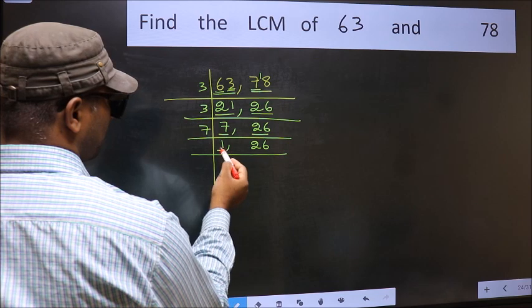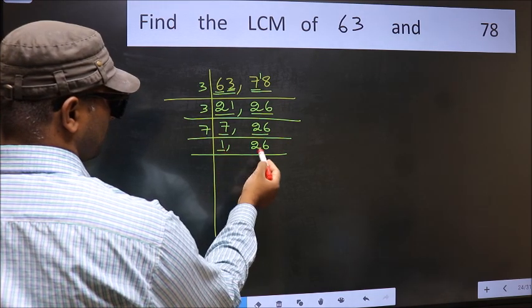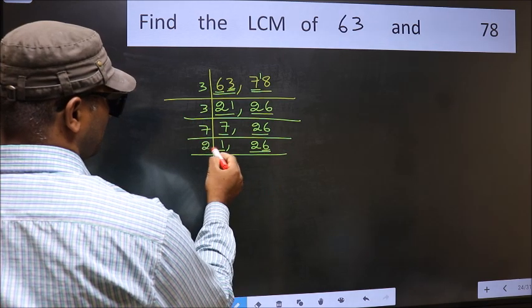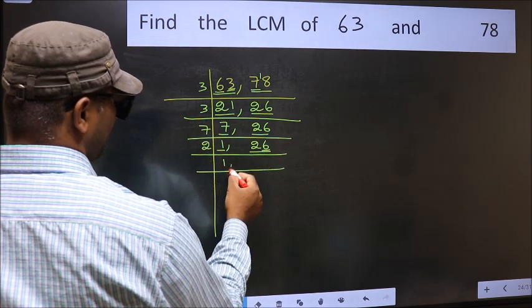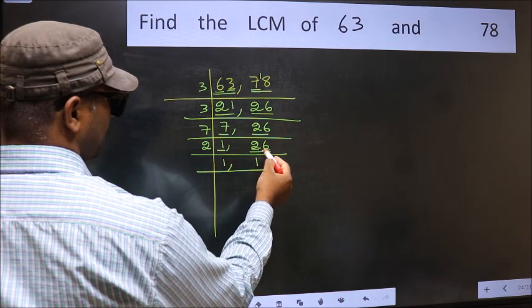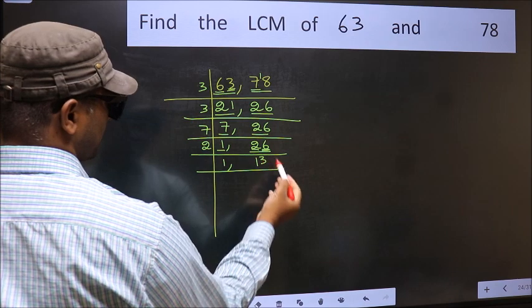Now we got 1 here. So focus on the next number, 26. Last digit 6 is even, so take 2. First number 2. When do we get 2 in the 2 table? 2 times 1 is 2. The other number 6. When do we get 6 in the 2 table? 2 times 3 is 6.